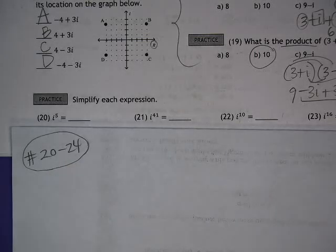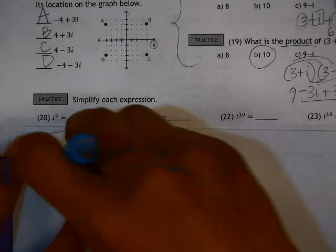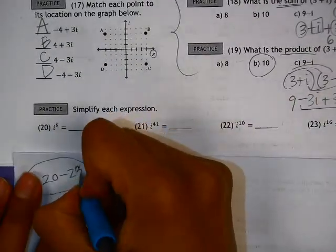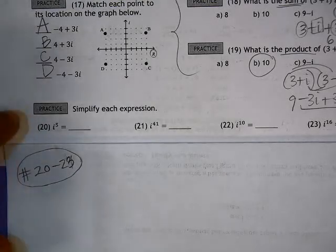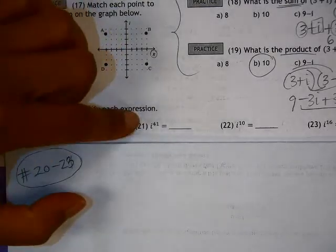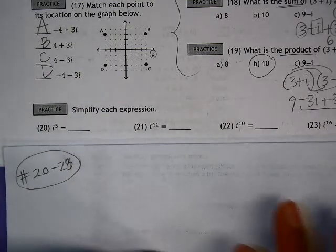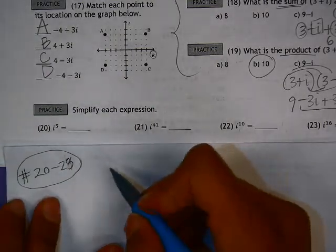All right, in numbers 20 through 24, or that's actually 20 through 23, we need to simplify each of these expressions where we have i to some exponent. Before we start doing these, let's just review a couple things that will be helpful.